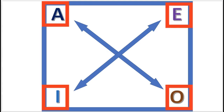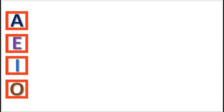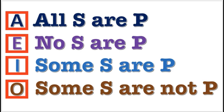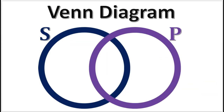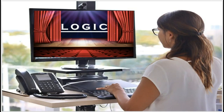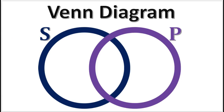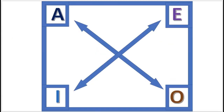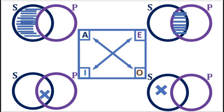These letters represent the four standard form categorical propositions. And remember Venn diagrams from the last video? When we add Venn diagrams to the modern square of opposition, it looks like this.